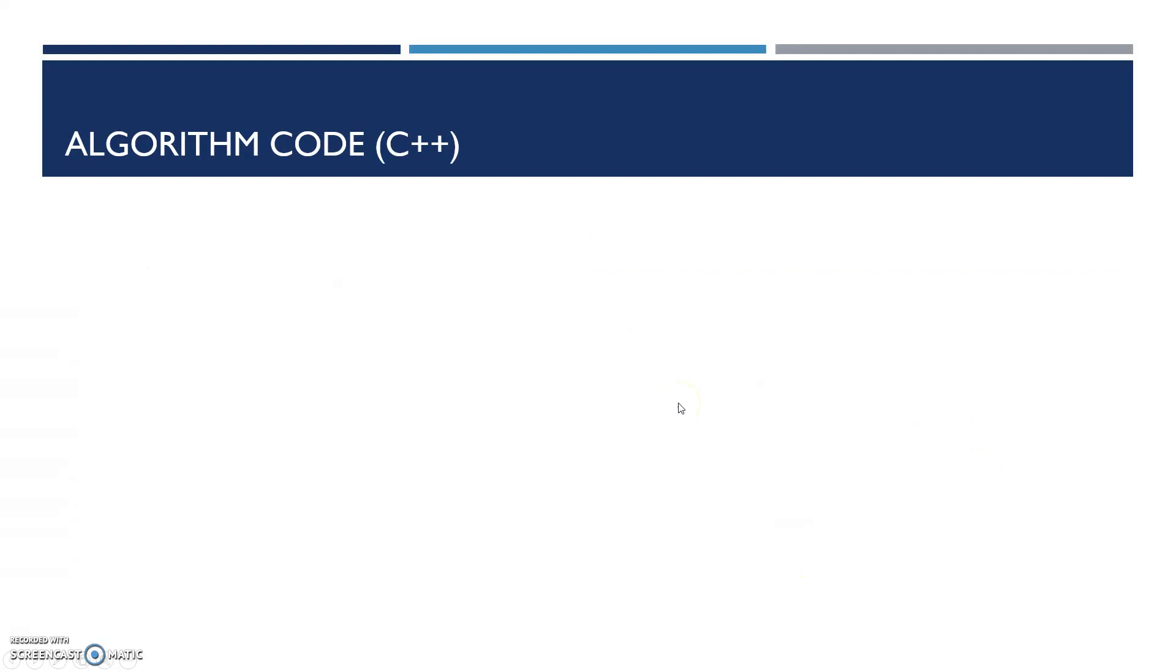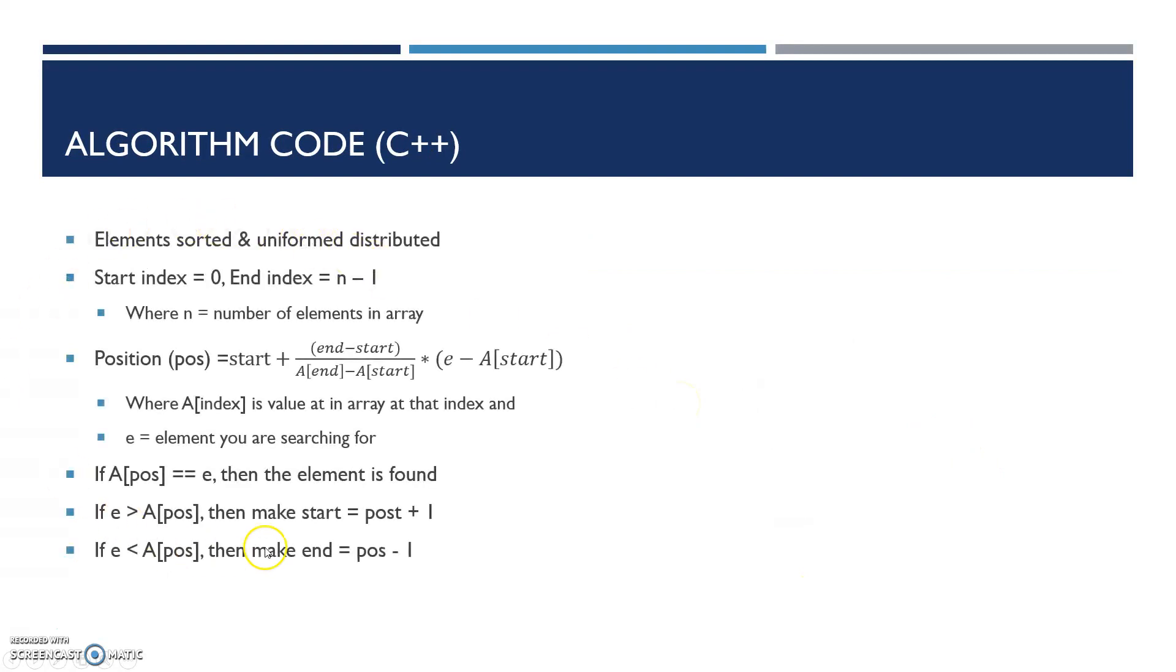If we were to convert the algorithm into C++ code, it would look like this. You have an integer being returned in your function header because that's an index, named interpolation search. It takes in 3 inputs: an array, number of elements, and the element you're looking for.